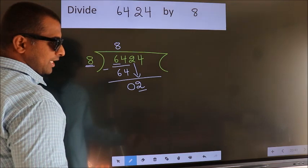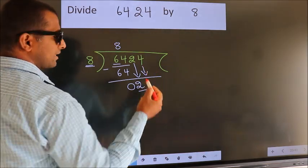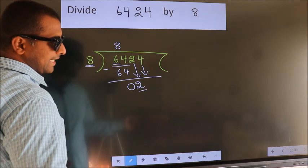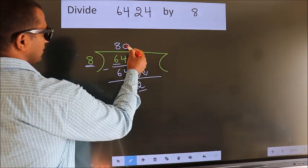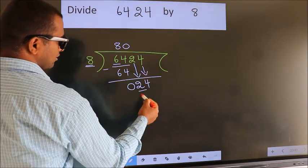So, we should bring down the second number. And the rule to bring down second number is, put 0 here. Then only we can bring down this number. So, 24.